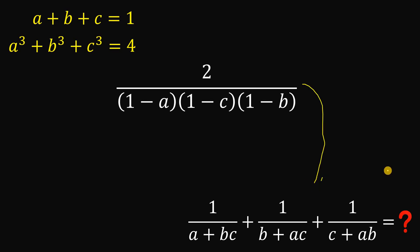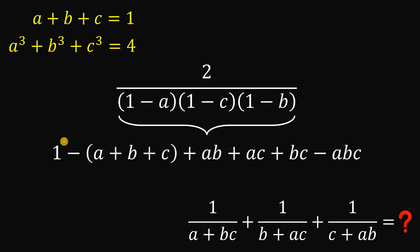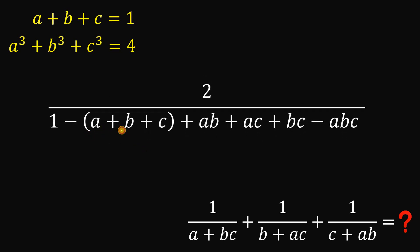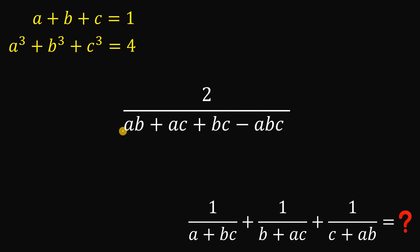So the numerator of our expression is 2. Now we need to evaluate the denominator. Multiplying out (1 minus A)(1 minus B)(1 minus C) using algebra gives us 1 minus A minus B minus C plus AB plus AC plus BC minus ABC. Since A plus B plus C equals 1, the terms 1 minus (A plus B plus C) equal 0, leaving us with AB plus AC plus BC minus ABC as the denominator to find.